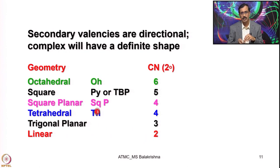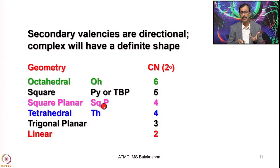All these geometries, structural establishments, primary valency and secondary valency — all these things he could do efficiently because of his quantitative thought and excellent experimental skills, using conductivity measurements. Beyond that, he did not have any other aid to support his work.